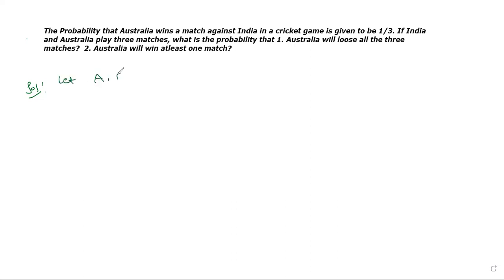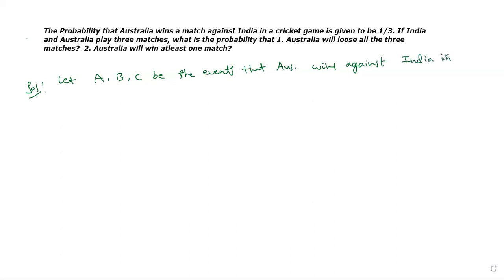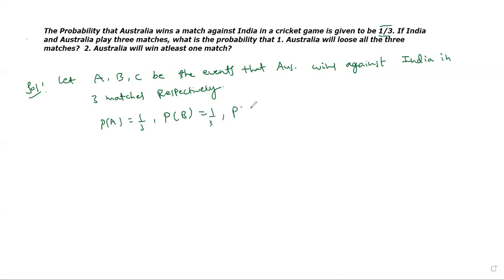Let A, B, C be the events that Australia wins against India in three matches respectively. Given that the winning probability is 1 by 3, P of A is 1 by 3, P of B also 1 by 3, and P of C also 1 by 3.